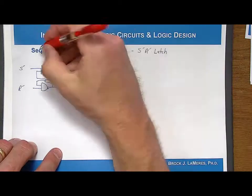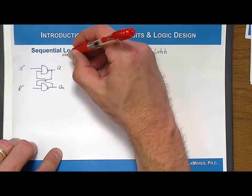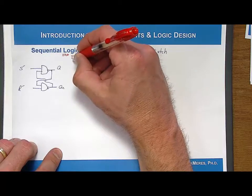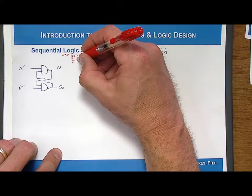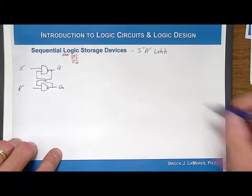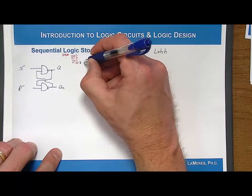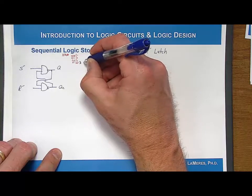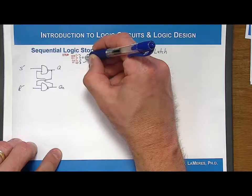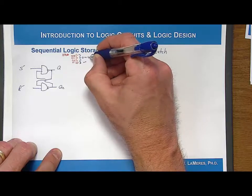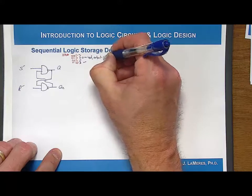Let's first write down the truth table for a NAND gate. The inputs are: 0,0 → 1; 0,1 → 1; 1,0 → 1; 1,1 → 0. More importantly, whenever I have 1 and 1 on the inputs, that's when I get a 0. But if I ever have a 0 on the input, then the output is a 1.